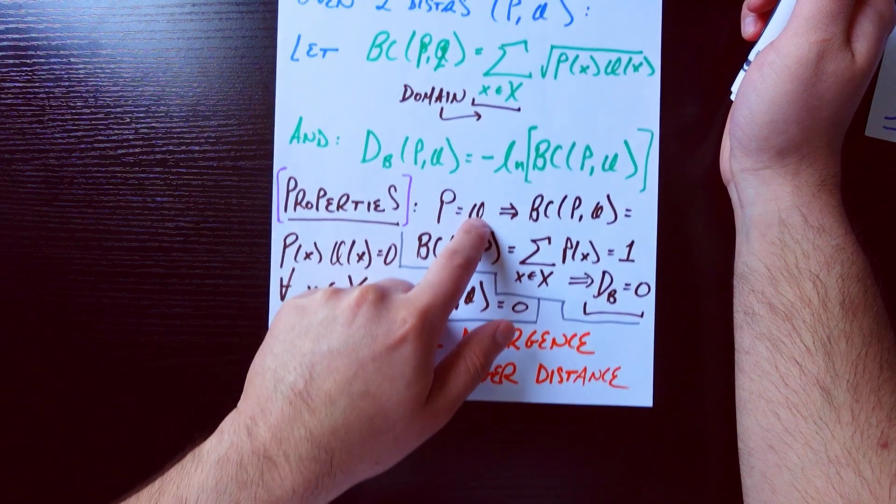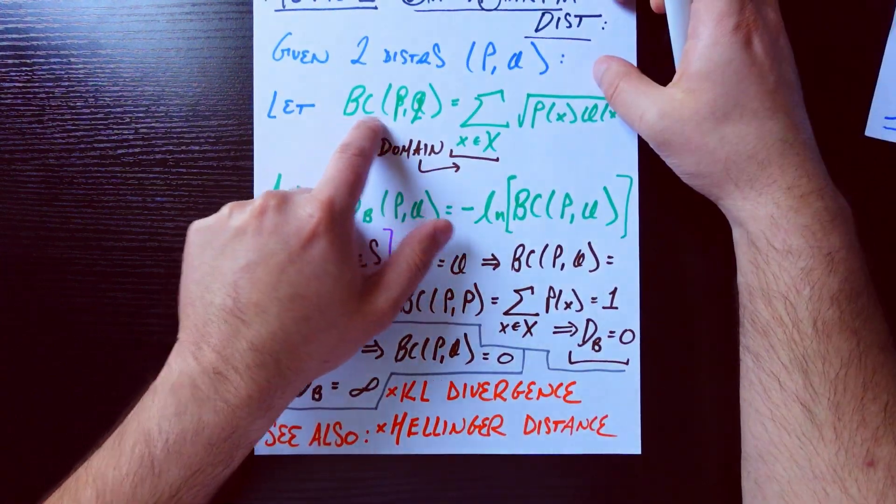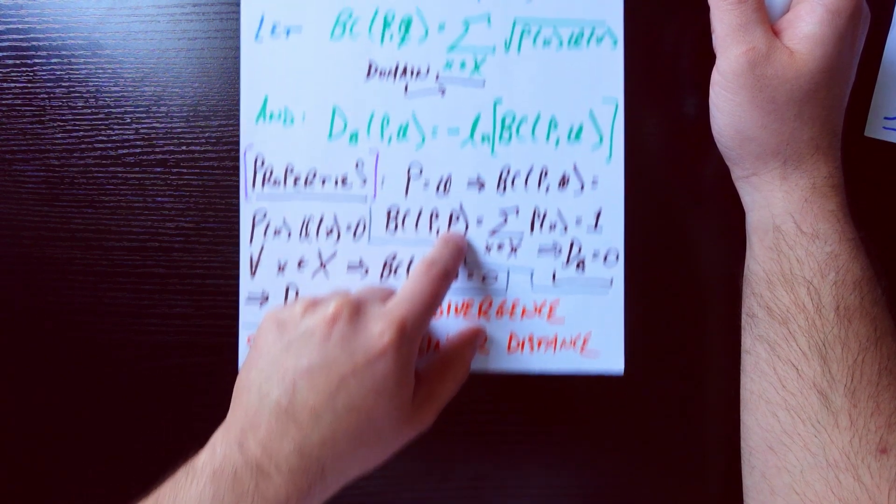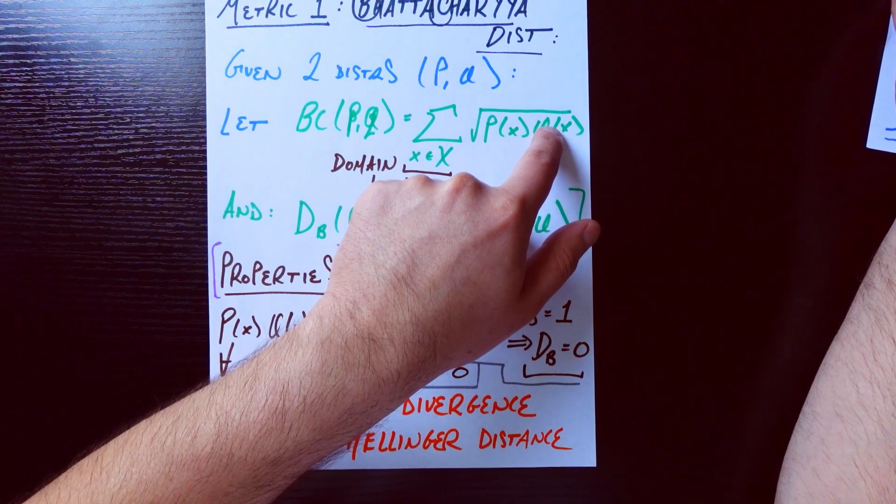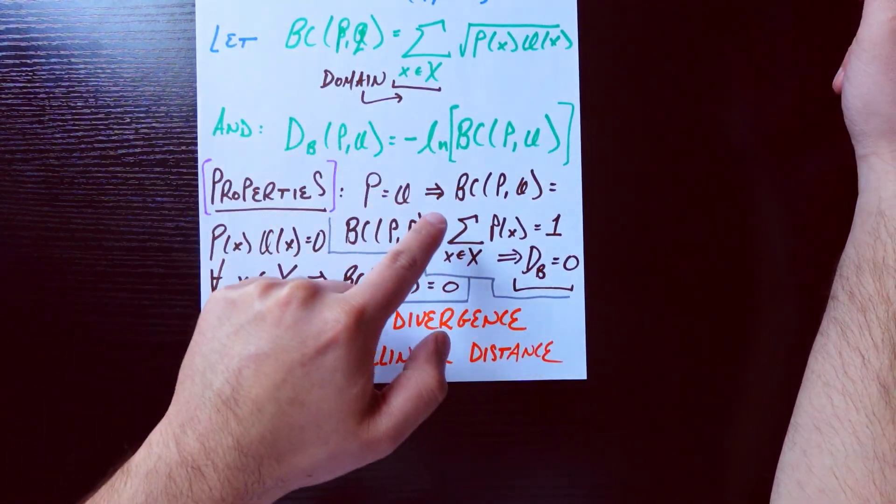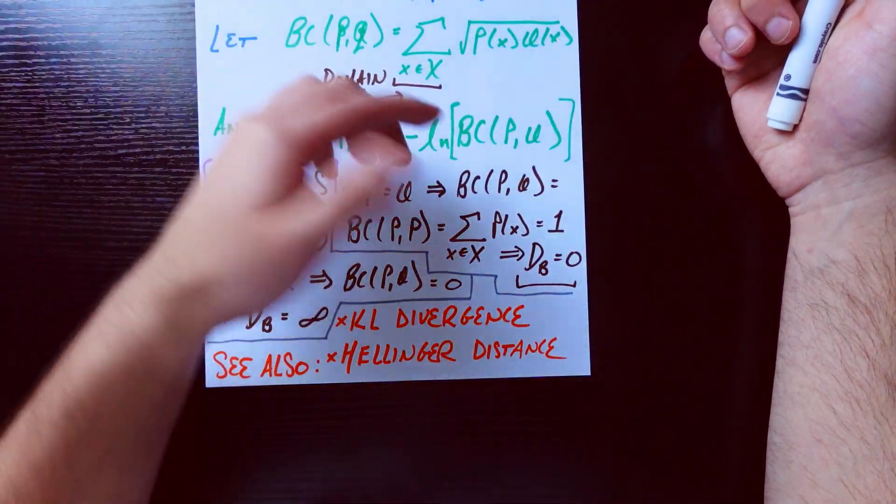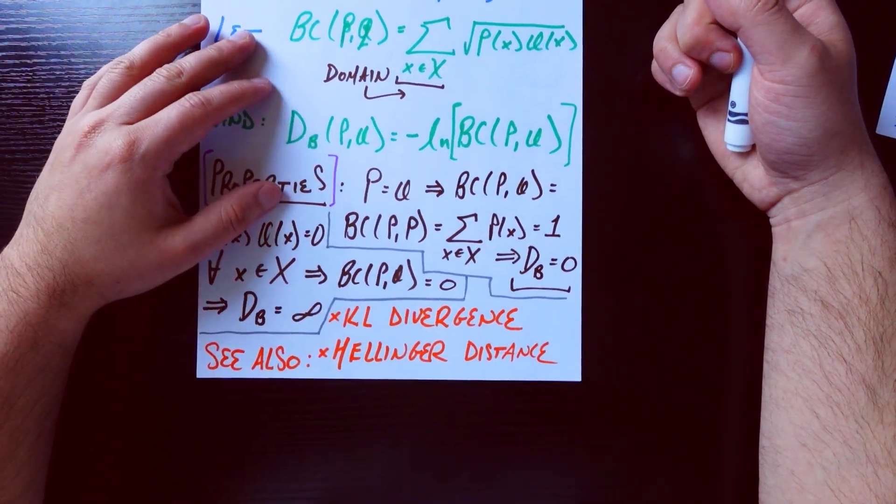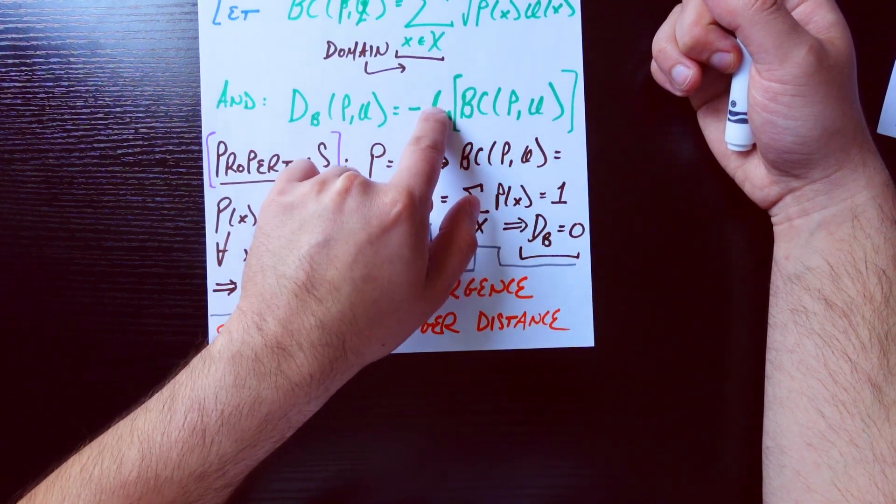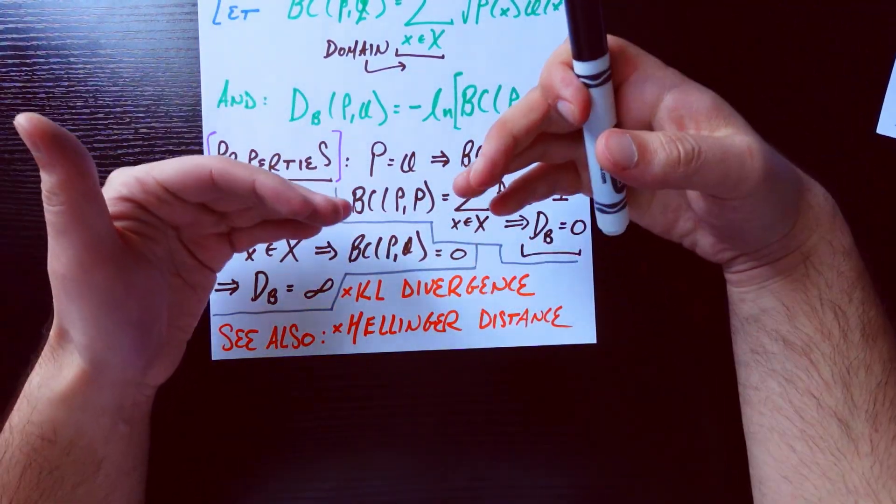I think the easiest way to understand how it works is to plug in some extreme cases. For example, let's say we put in P equals Q—so we put in the same distribution in here twice. Both P and Q are the same distribution. Then what happens to this coefficient? Well, this coefficient becomes BC of P and P. Now if you think about P(x) times P(x), that's going to be P(x) squared. When we take the square root of that, you just get P(x) back. So this coefficient BC just becomes a sum over the domain of P(x). If you sum a probability distribution over its domain, it has to add up to 1, or integrate to 1 if you're talking about continuous things. And so this coefficient is 1. You plug that into your negative natural log—natural log of 1 is 0—and so the distance is 0.